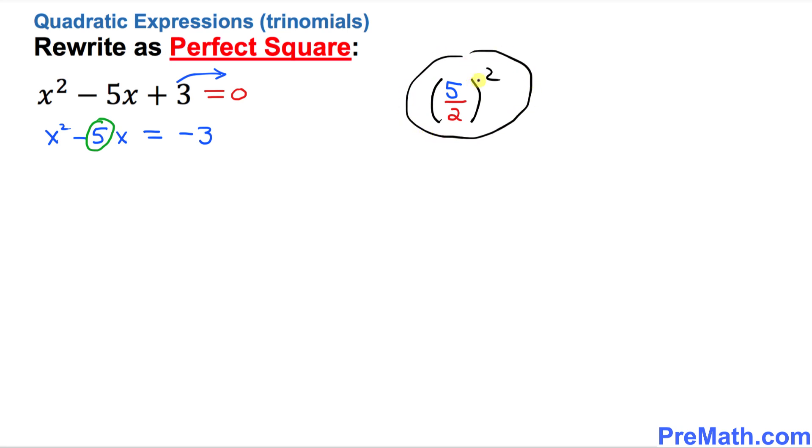So we want to add this quantity on both sides of this equation. Let's go ahead and write it down. So I'm going to write down x squared minus 5x plus equals negative 3 plus.